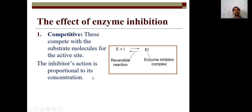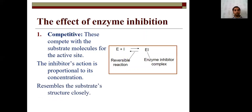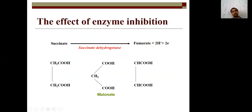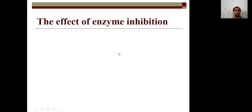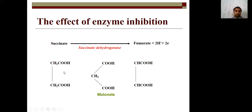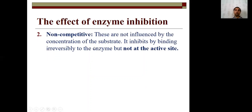This inhibitor-enzyme interaction is proportional to inhibitor concentration — if inhibitor concentration is high, the enzyme is more blocked. The inhibitor resembles the substrate structure, which is why it easily binds to the active site. A classic example: succinate is converted to fumarate by succinate dehydrogenase. Malonate is a structural analogue of succinate. If malonate binds with succinate dehydrogenase, it cannot work — malonate is a competitive inhibitor because it is structurally analogous to succinate.